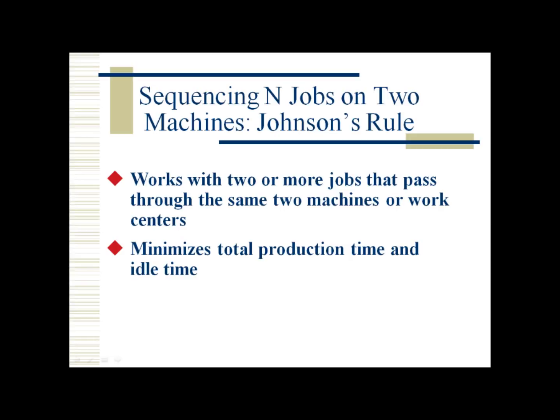Recalling our last discussion, we discussed that there are several cases in job shop scheduling. The first case was scheduling multiple jobs in one machine, and the second case is where we sequence multiple jobs into two machines. Basically, we have a job that enters two machines in a sequential manner. When the first job enters the first machine, the second machine is completely idle because it needs to wait for that job to finish on the first machine and then it gets processed on the second machine.